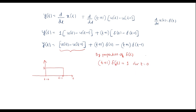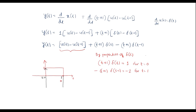Similarly, for minus (t plus 1) delta of t minus 1, to evaluate delta of 0 we substitute t equal to 1. This gives delta of 0, and (t plus 1) becomes 1 plus 1 equal to 2. Therefore its value is minus 2 at t equal to 1. So on the waveform, at t equal to 0 there is an impulse of strength 1, and at t equal to 1 there is an impulse of strength minus 2. This is the y of t waveform.